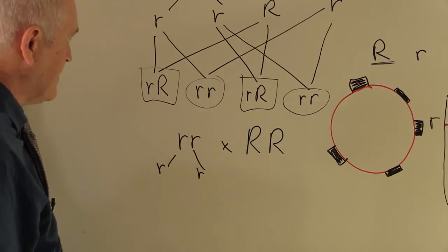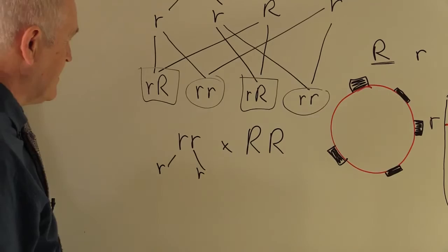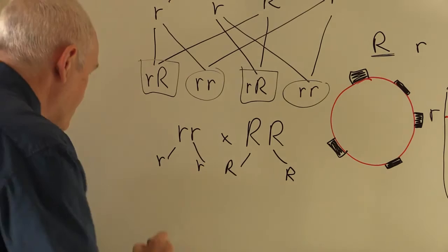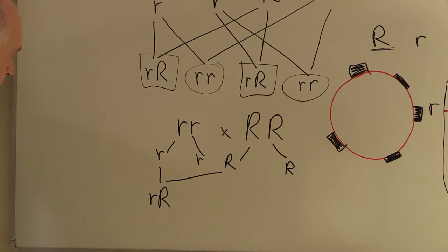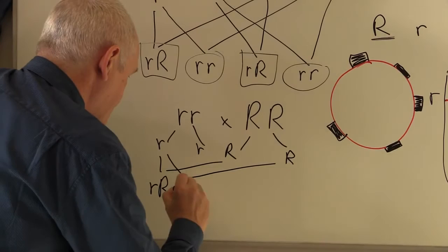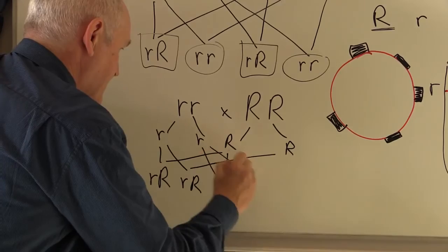So this could combine with that one, giving us Rr. Because there is one copy of the Rhesus positive gene, that is going to give us a Rhesus positive fetus. Likewise with this possible combination. In fact, likewise with that one, and indeed likewise with that one.